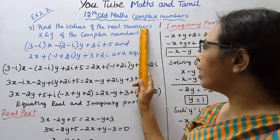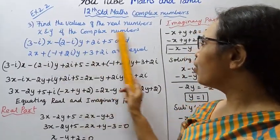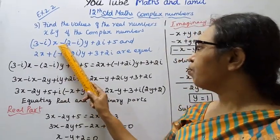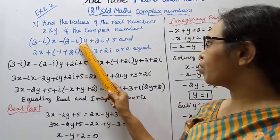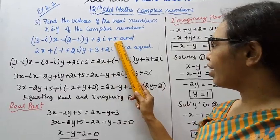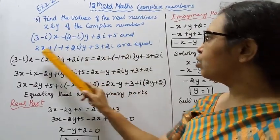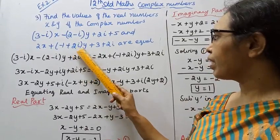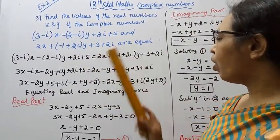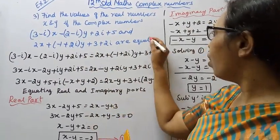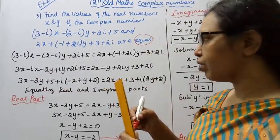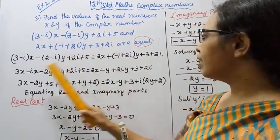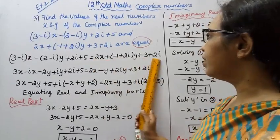Find the values of the real numbers x and y if the complex numbers (3 minus i)(x minus 2) minus i(y plus 2) plus (5 plus 2x) minus i and (1 plus 2y)(y plus 3 plus 2y) are equal to each other.